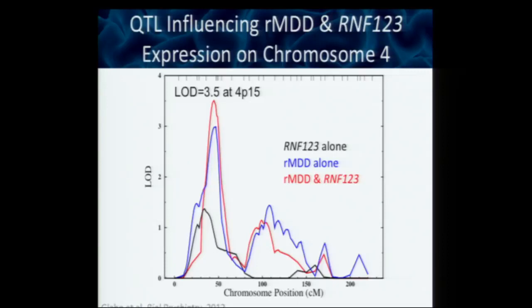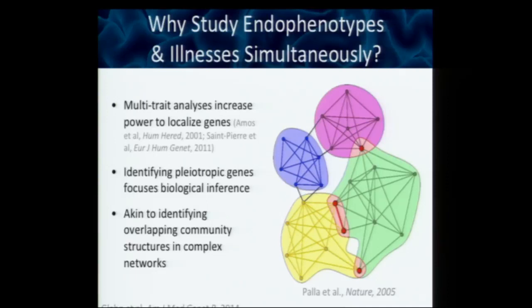Importantly, RNF-123 is from chromosome 3, and this locus is on chromosome 4 — so whatever is there can't be the cis-regulation of that transcript; it has to be some sort of trans-regulation. This brings up an interesting question: why study endophenotypes and illnesses simultaneously? Psychiatric illnesses are polygenic and difficult. Endophenotypes are undoubtedly polygenic and complicated. But multi-trait analyses increase your power, both theoretically and empirically.